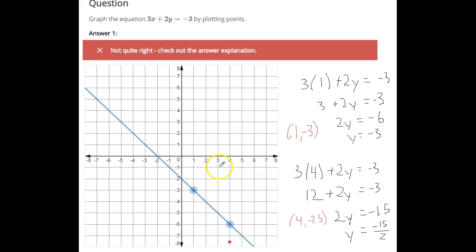Let's plug a 3 in and see what we get. So here I've plugged a 3 in for x. 3 times 3 is 9. When you subtract 9 from both sides, you'll get negative 12 on the right. Dividing by 2 gives us a nice whole number, negative 6. So we get another point on the line is 3, negative 6. So 3, negative 6 would be a point on the line.